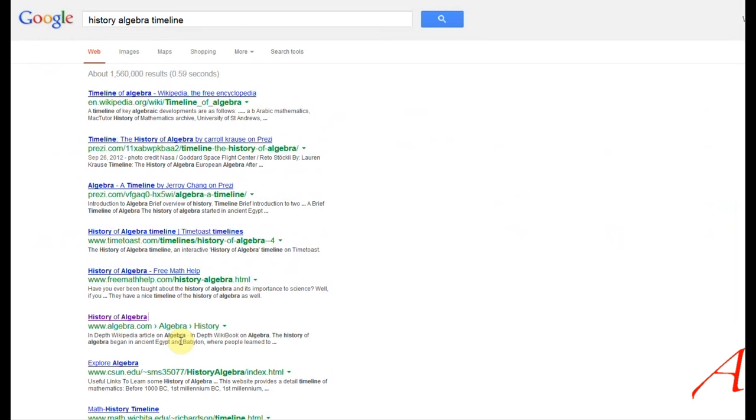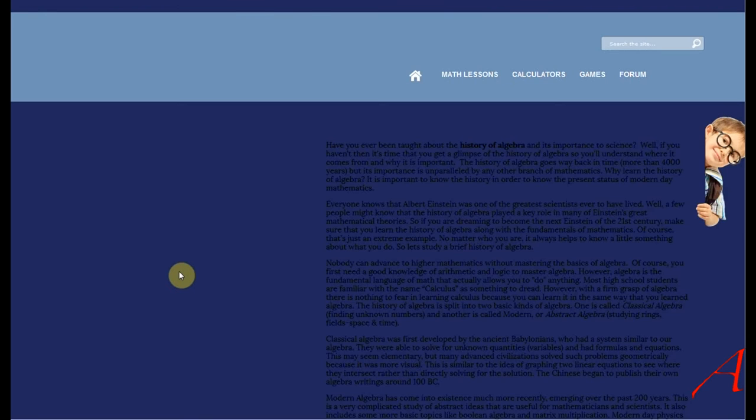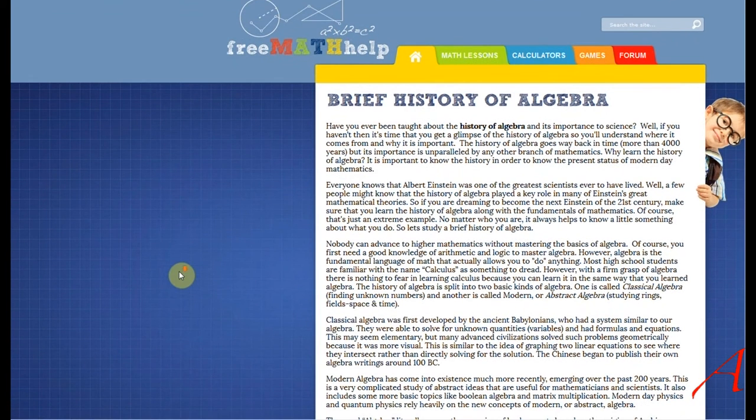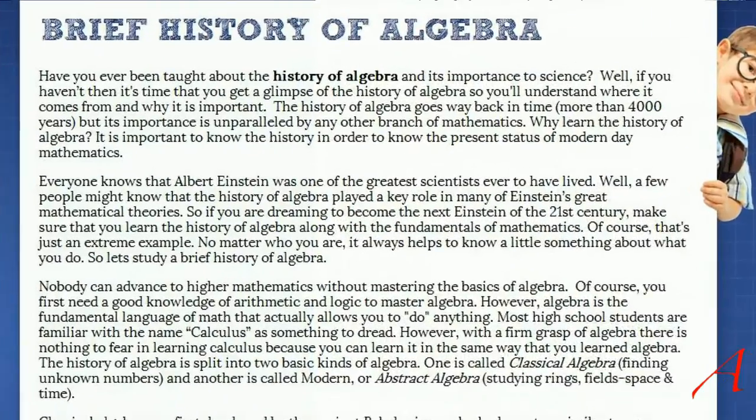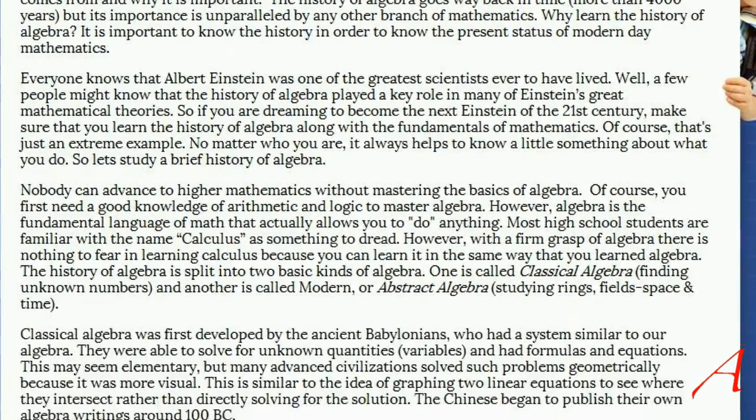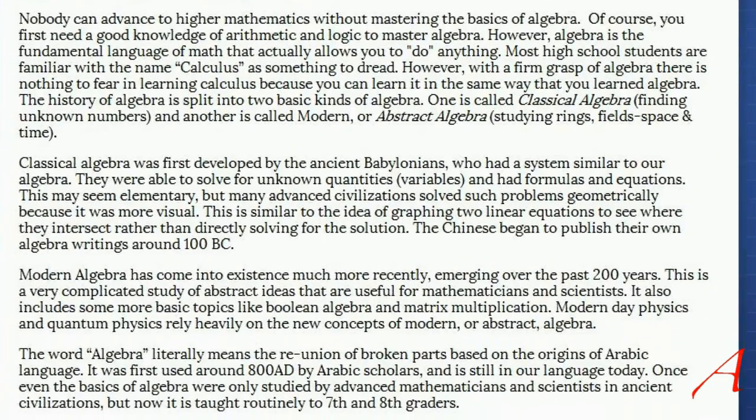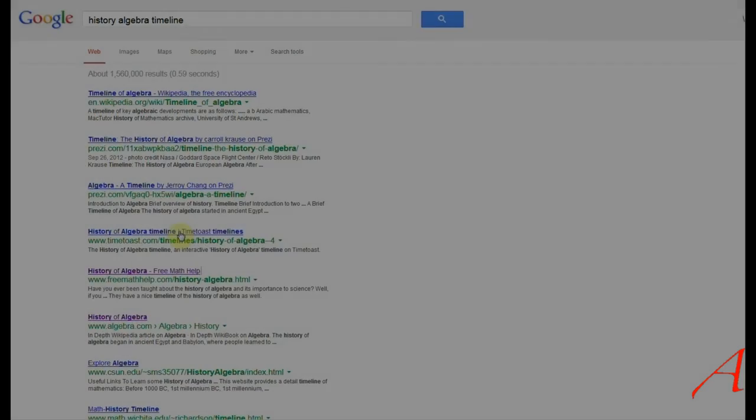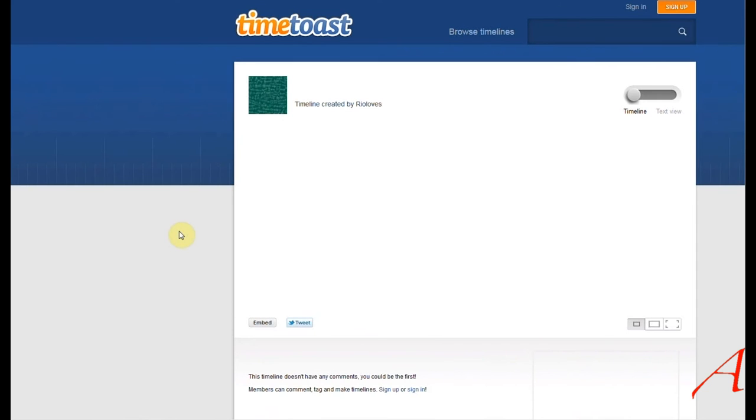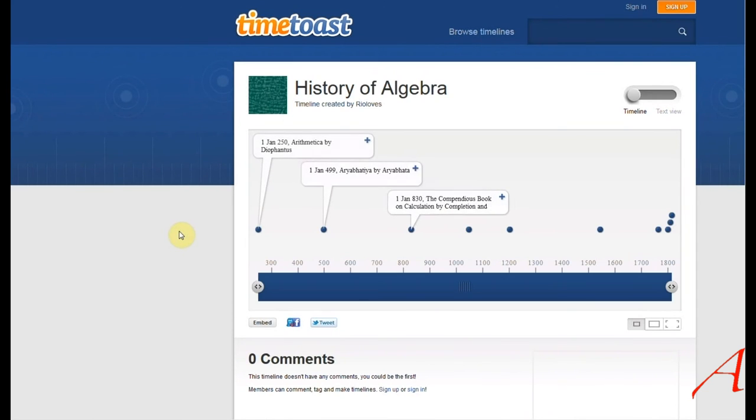If I go to the History of Algebra, a page primarily made for educational purposes, it says again right there that algebra goes all the way back to the Babylonians and mentions the text written by the Chinese. And jumping to the more recent developments, they then explain the origin of the name, not the function or the contents of that name.